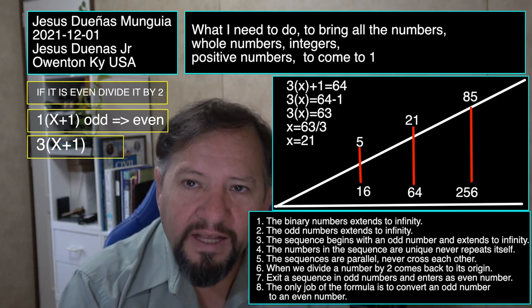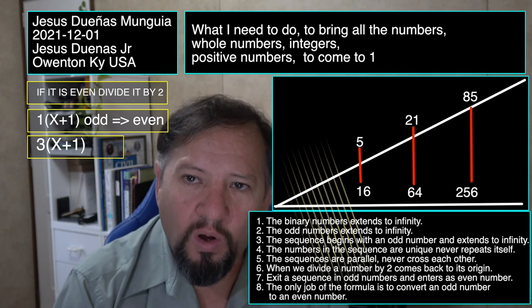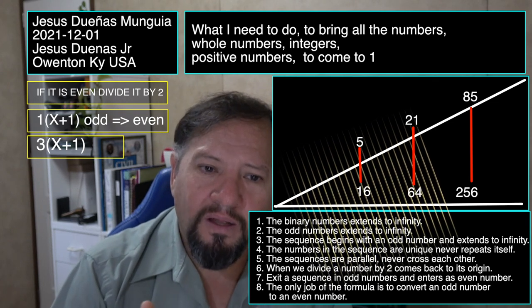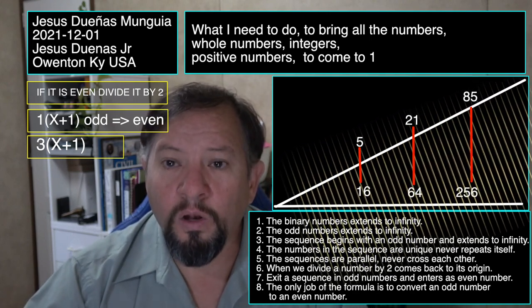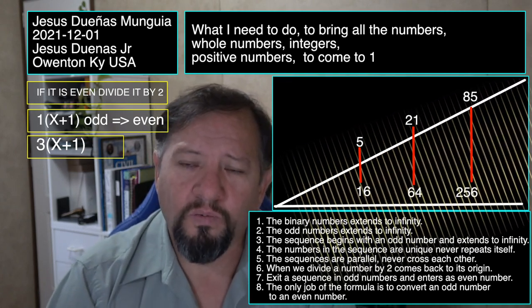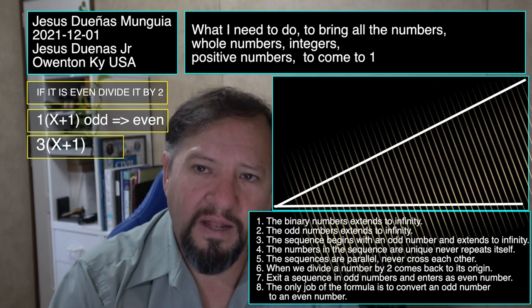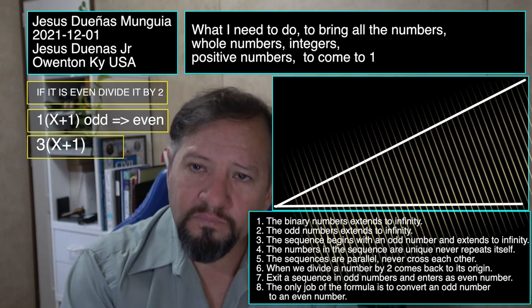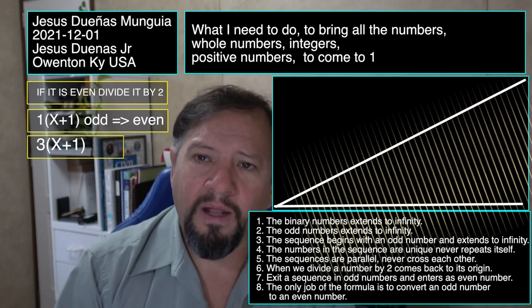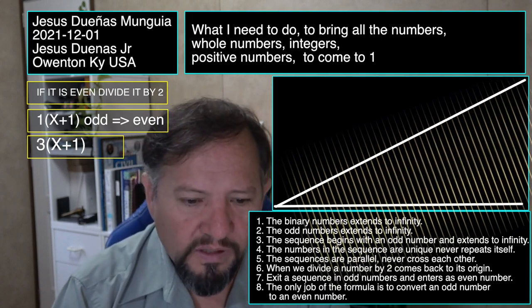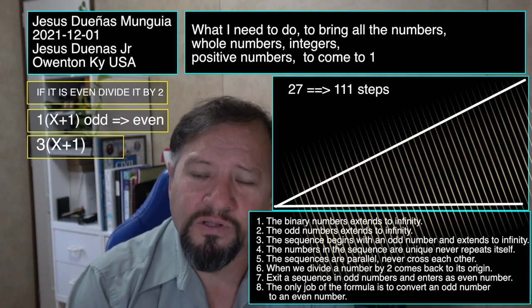As you go higher, expanding the binary system and odd numbers to infinity, you start seeing all these doors open — available to bring numbers to 1. That's what mathematicians see as the hailstone effect: numbers increase and increase and suddenly drop to 1. It's because there are infinitely many doors available to bring that number to 1. For example, 27 takes more than 100 steps — it looks like it's going to infinity, but it hits one of those doors and comes back to 1.